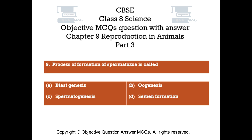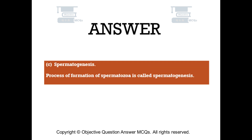Question number 9. The process of formation of spermatozoa is called. Option A: Blastogenesis. Option B: Oogenesis. Option C: Spermatogenesis. Option D: Semen formation. The right answer is option C — Spermatogenesis. The process of formation of spermatozoa is called spermatogenesis.